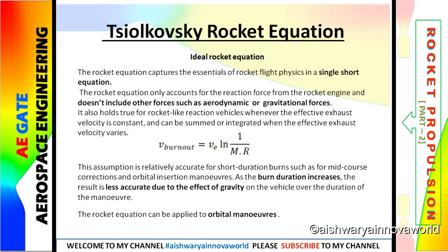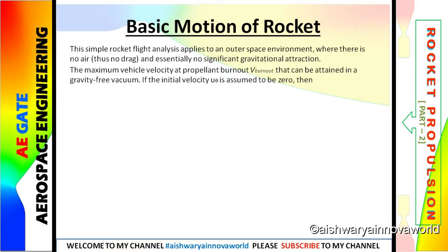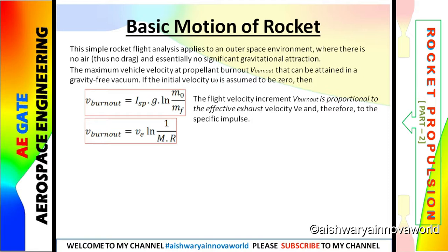This equation can also be applied for orbital manoeuvres. For basic rocket motion, when manoeuvring in a gravity-free vacuum condition with initial velocity zero, the equation becomes: V burnout equals ISP into G into the logarithm of M0 by Mf. Here M0 by Mf is the inverse of mass ratio. The combination of ISP into G is equivalent to VE, the effective exhaust velocity, since specific impulse equals VE divided by gravity.